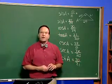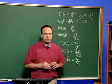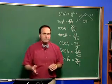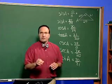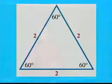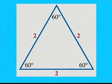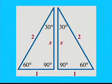Those are the six trig functions based on the right triangle definitions. Now, there are certain angles in trigonometry that are used so often, such as 30 degrees and 60 degrees, that they deserve special study. Let's develop triangles containing those angles and use them to find the trigonometric function values. We start with an equilateral triangle where all three angles are 60 degrees and all three sides are equal to two. If we drop a perpendicular from the top angle, we divide it into two congruent 30-60-90 triangles.